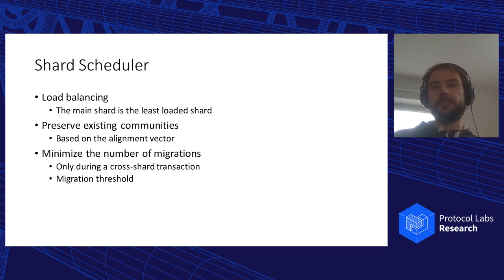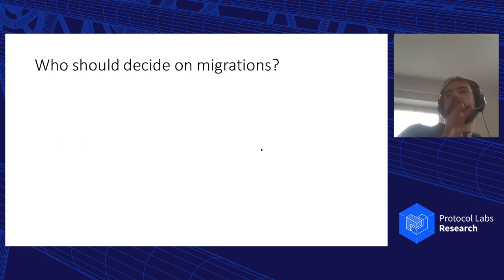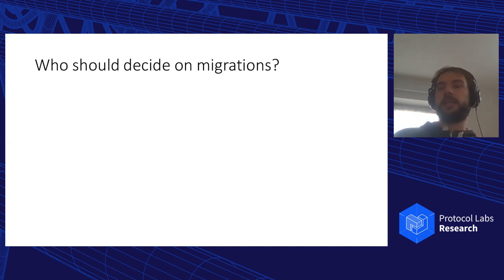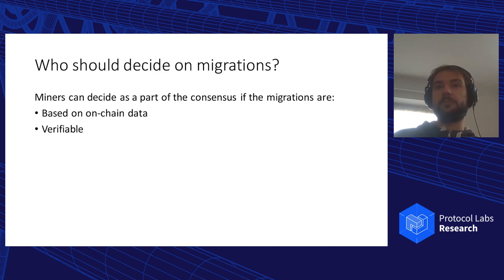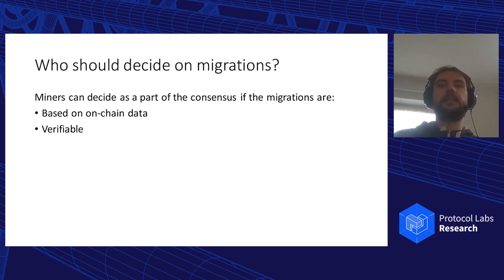With this mechanism, we achieve load balancing because the main shard is the least loaded shard across all involved shards, we preserve existing communities using the alignment vector, and we minimize the number of migrations. Now we know these migrations improve performance — the question is, how do we enforce them? We decided that miners should be the ones enforcing those decisions as part of the consensus protocol, since all decisions are based only on on-chain data and are verifiable by everyone in the network.